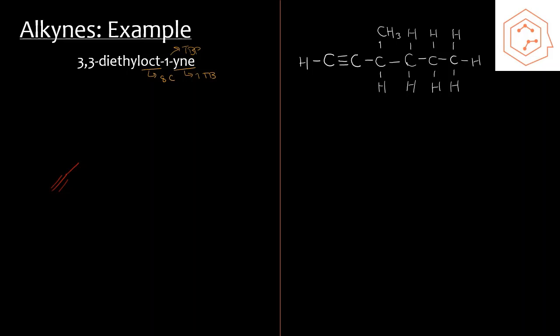When drawing a structure with a triple bond, instead of curving the chain at the triple bond, you draw a straight line from carbon one through two to three, because the bond angle at a triple bond is 180°. After drawing the full carbon backbone and numbering the chain, we add the substituent groups: two ethyl groups both at position three. We draw the first ethyl group at carbon three and the second ethyl group at the same location — and that's the full structure for 3,3-diethyloct-1-yne.